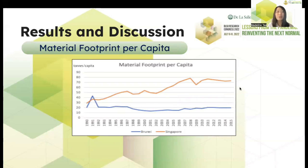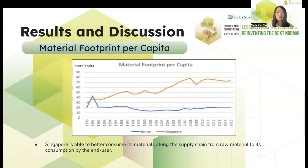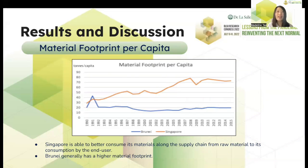Next, we have the material footprint per capita. Similar to the first graph, we show both countries' performances in one graph. Singapore is able to better consume its materials along the supply chain from raw materials to its consumption by the end user, which implies that they generate fewer wastes and may have a cleaner manner of consumption compared to Brunei. Brunei generally has a higher material footprint and has the need to improve on this aspect through establishing policies and inspections for companies on their consumption procedures.